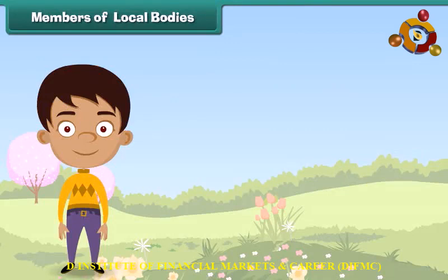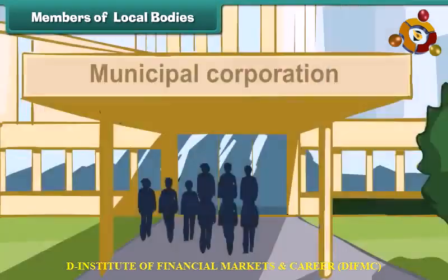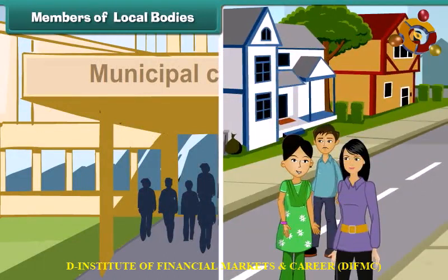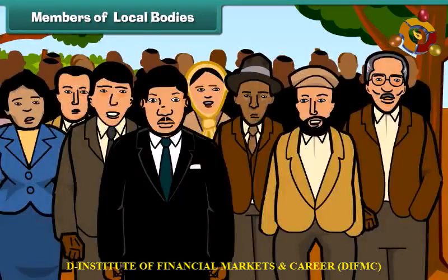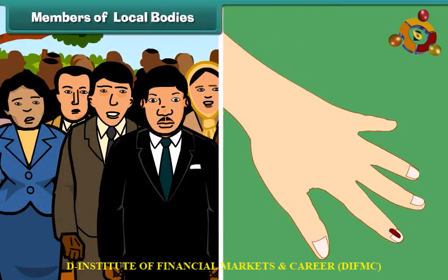Municipal committees and corporations are known as local bodies. Members of the municipal committee or corporation of a town or city are elected by the people of that town or city. All men and women who are 18 years of age or above are allowed to cast their votes in municipal elections.